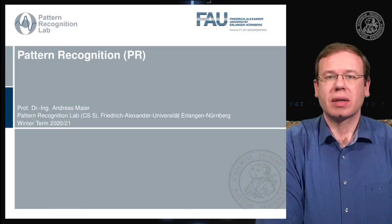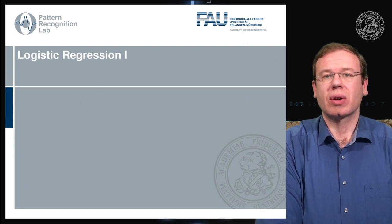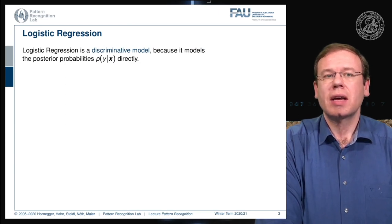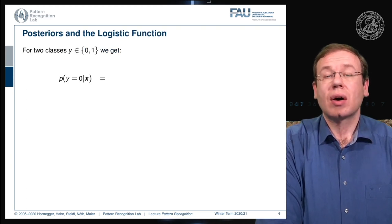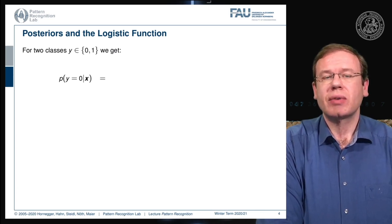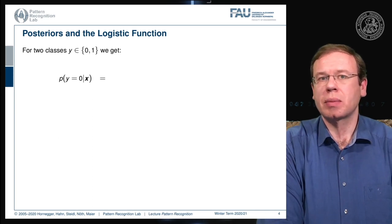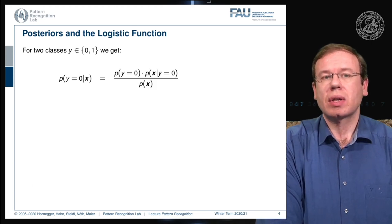Logistic regression is a discriminative model because it models the posterior probabilities directly. We have two classes encoded as 0 and 1, and we want to compute the probability of observing class 0 given some observation X. We know that we can apply Bayes theorem to do this.